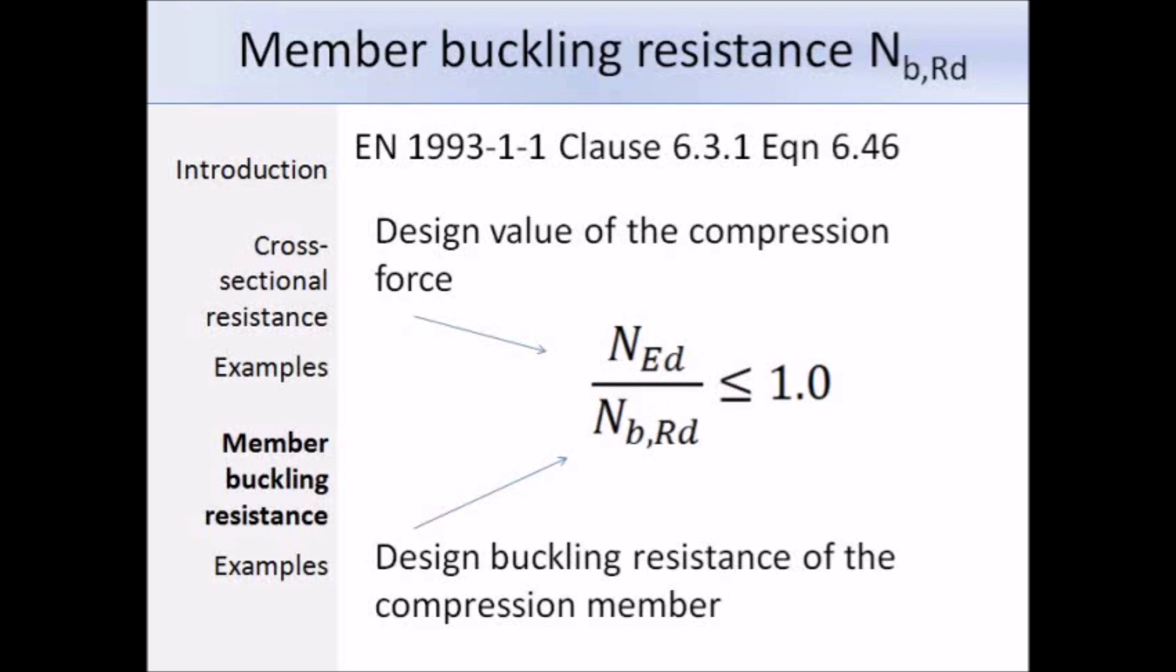Clause 6.3 of EN 1993 part 1-1 covers the buckling resistance of members. We use equation 6.46 to ensure that the design compression force is less than the design buckling resistance of the section.